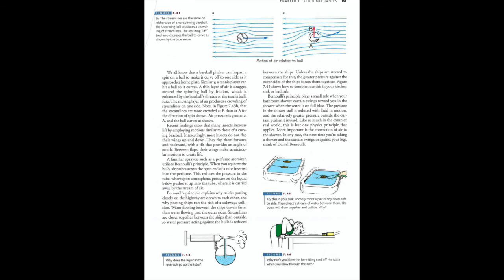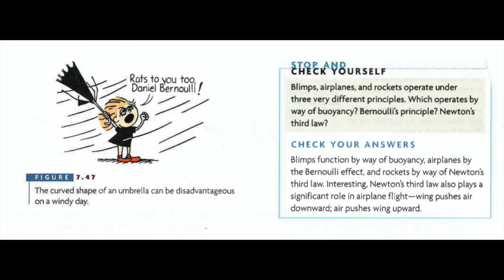As you look at the bottom of page 151, it says, why can't you blow the bent filing card off the table when you blow through the arc? And the reason why is because the pressure is underneath the filing card, so it's pulling it down towards the table. If you blow on top of the card, then it will lift it off the table, and it will slide. The same reason why in a strong wind, if you have an umbrella, like on page 152, if you hold the umbrella, the wind hitting the top of the umbrella creates less pressure on top and more pressure below. And so therefore, the umbrella will rip and invert as the lady, and she's saying, rats to you, Daniel Bernoulli. She's referencing Bernoulli's principle.